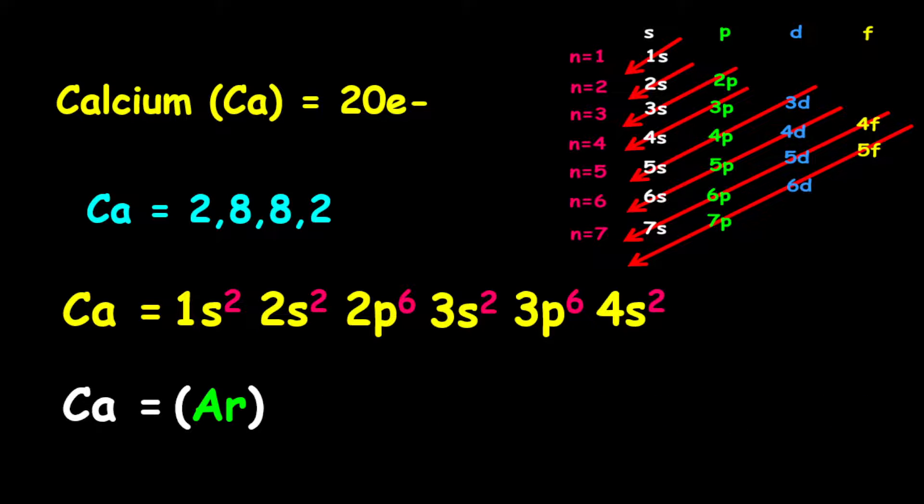For the shortened electron configuration, it is given as argon, and argon represents the inner shells of calcium. Therefore, it is argon followed by 4s². Therefore, there are two valence electrons on the calcium atom.